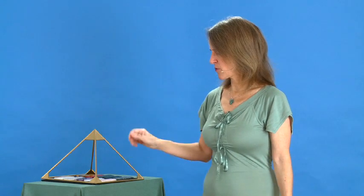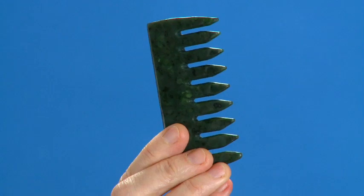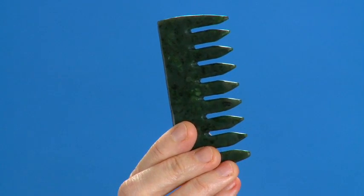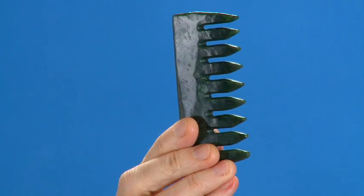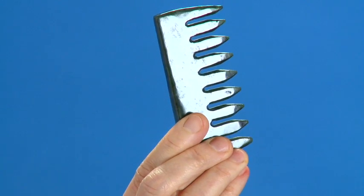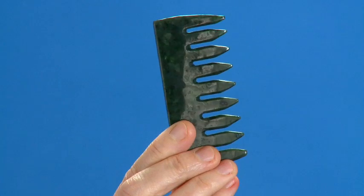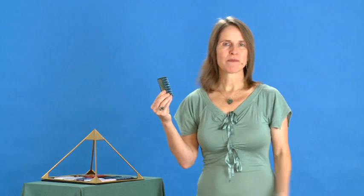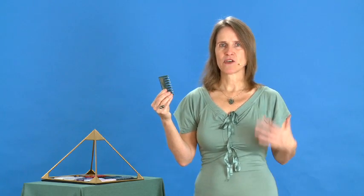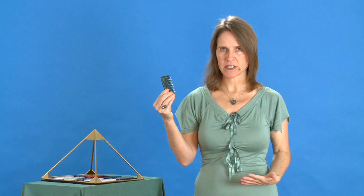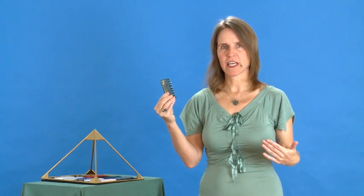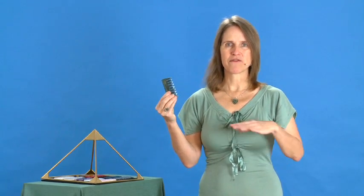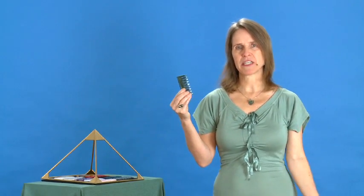The second gem comb that we had made is the jade gem comb. And although I cannot make any promises in regards to healing, this is the one I recommend when people ask me, which gem comb should I use for my hair problems, for hair thinning or hair loss. Jade and gemstone therapy is wonderful for regulating the blood circulatory system and for strengthening the bladder and kidney. Now, bladder and kidney are often involved when a person experiences hair challenges.